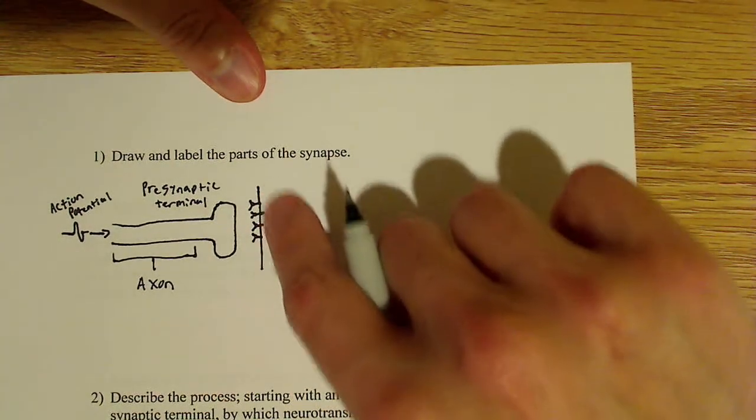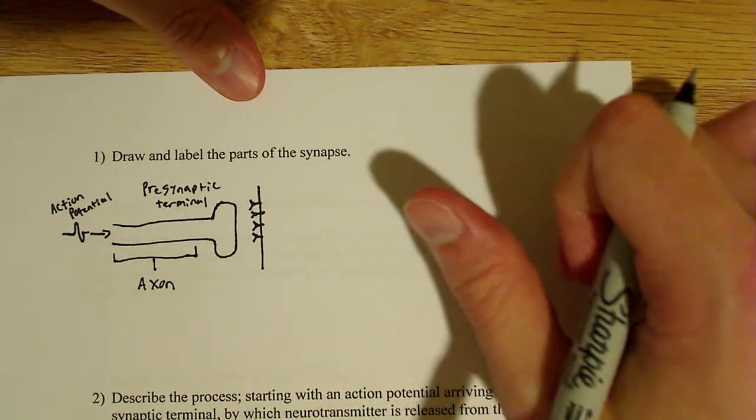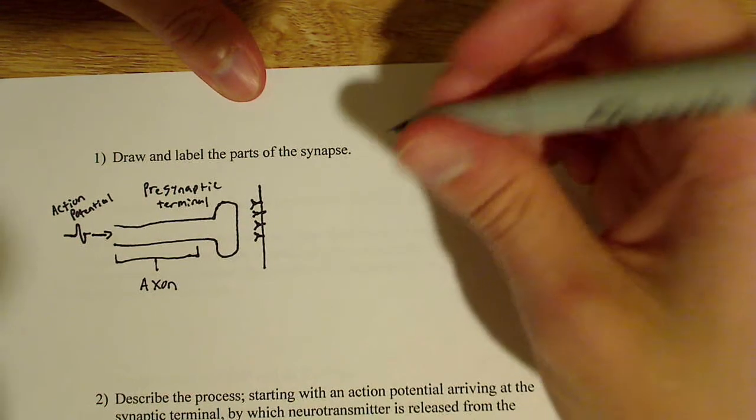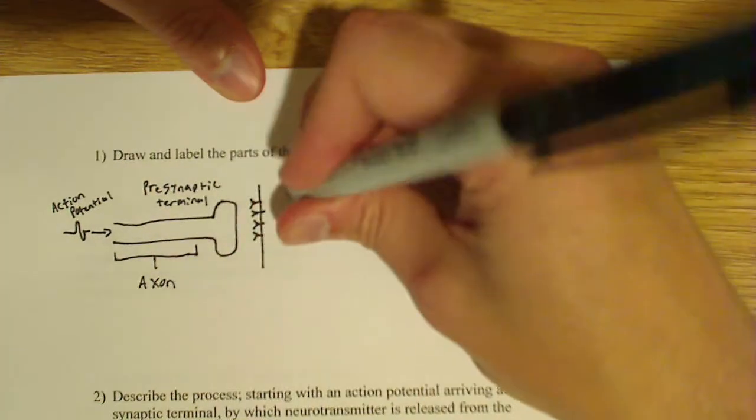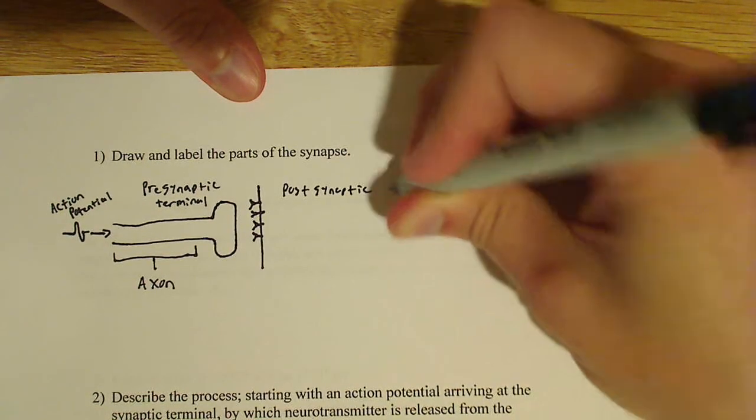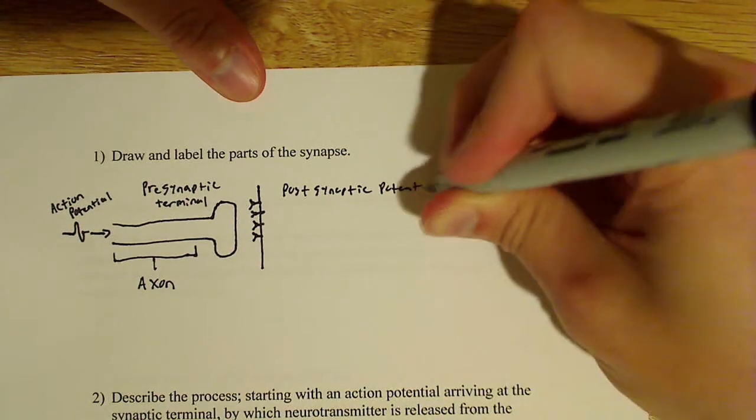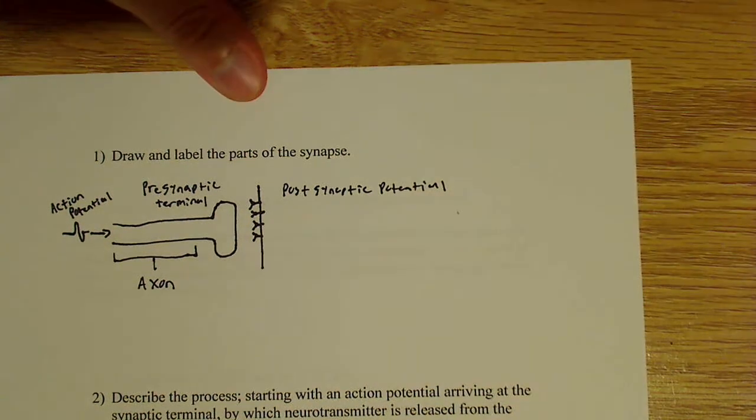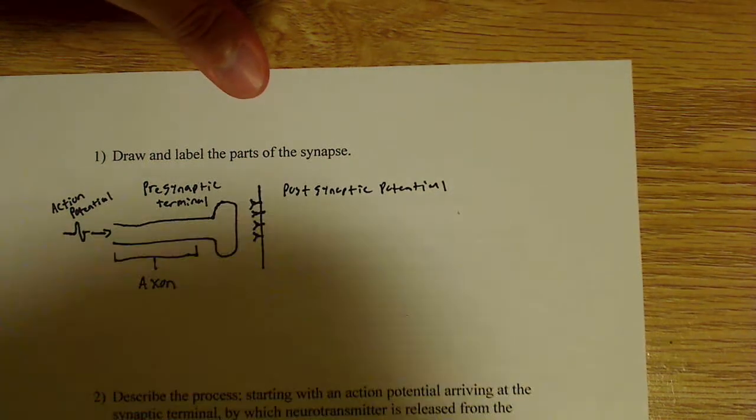And this section over here, I'm just drawing it kind of as a flat sheet. I mean, you could draw it different ways. But this is what's going to be known as the postsynaptic potential.